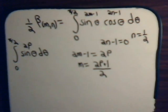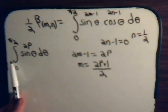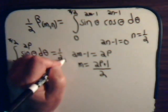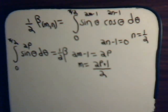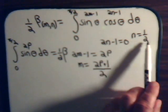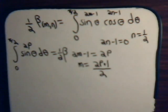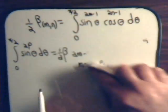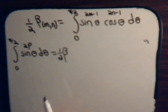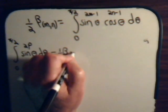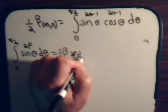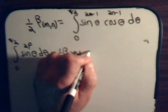So this integral equals one half times the beta function where m is (2p+1)/2 and n is one half. Let's put those in: we have two p plus one over two, and one half.